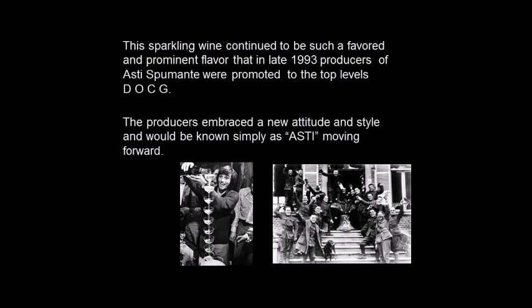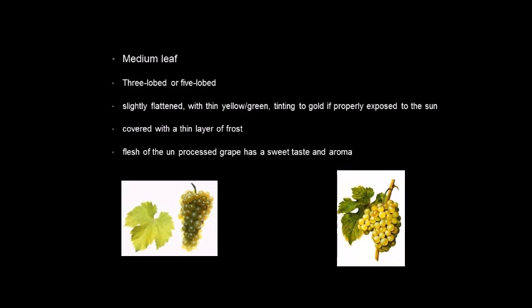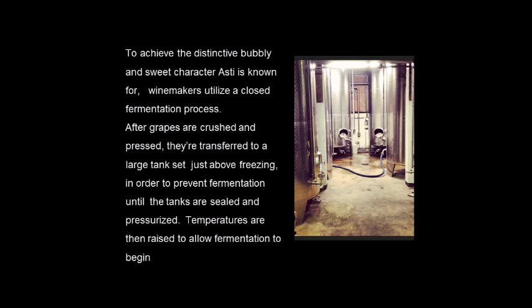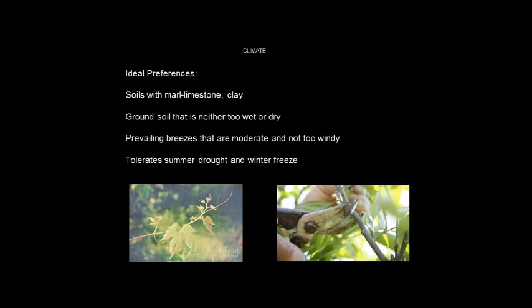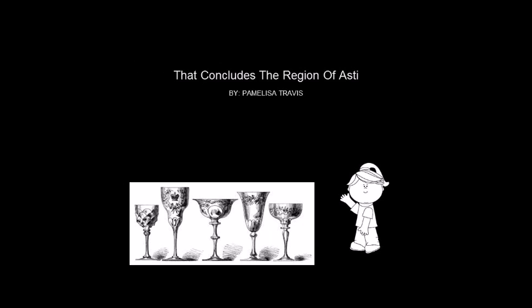That concludes Rhone important AOCs. We are now moving into Italy — the seven factors of Veneto, Piedmont, and Tuscany, which we already covered. This has been a production of Titus Turner and Frank Hovalchuk from the UNLV Vine to Wine 2014 class. Enjoy yourselves during that exam!